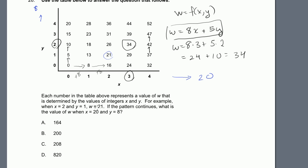So we found our function of x and y. And what are they asking? The pattern continues. What is the value of w when x is equal to 20 and y is equal to 8? Well, in that situation, w is equal to 8 times x, which is 20, plus 5 times y, which is 8, which is equal to 160, plus 40, which is equal to 200. And that is choice B.